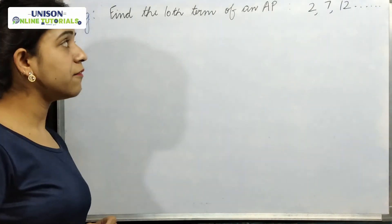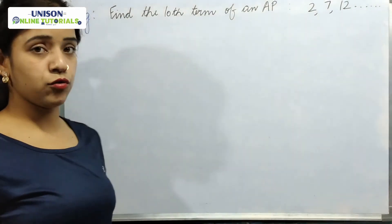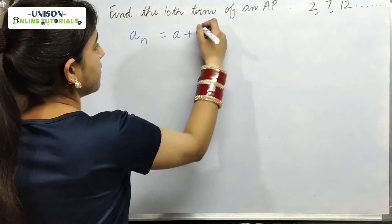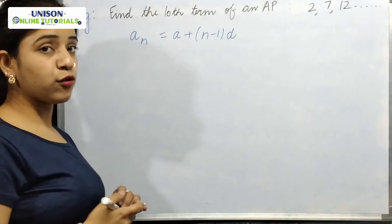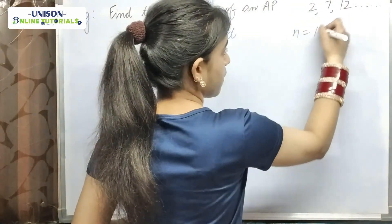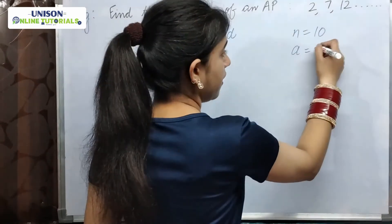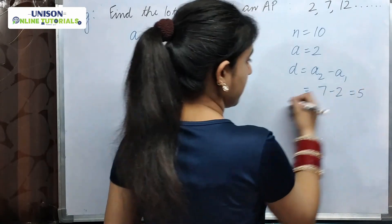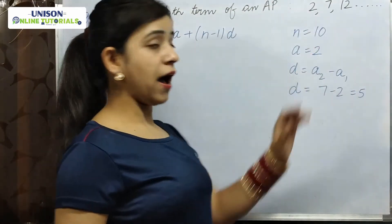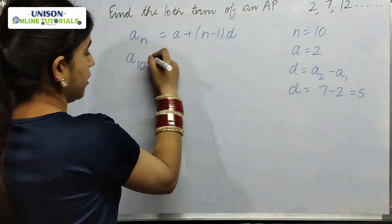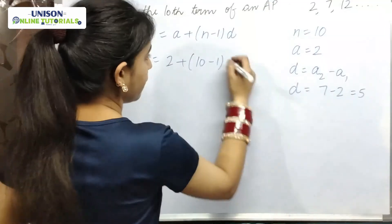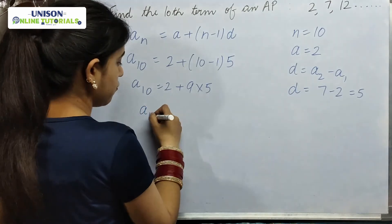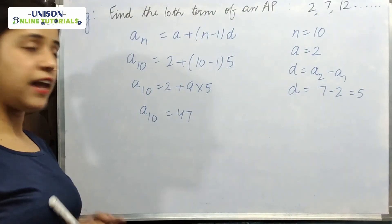Now let's take another example. We have to find the tenth term of the AP: 2, 7, 12. We know AN = A + (N-1)D. For the tenth term, N = 10. The first term A = 2, and common difference D = 7 - 2 = 5. So A10 = 2 + (10-1)×5 = 2 + 9×5 = 2 + 45 = 47. In this way, we can find any term of a given AP.